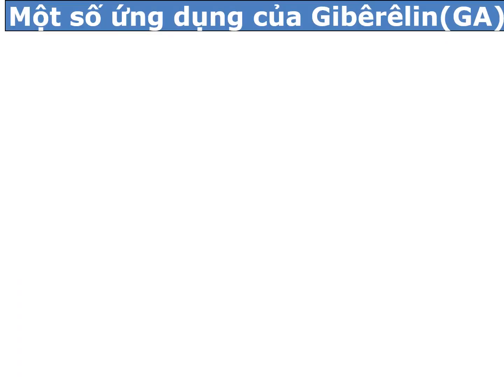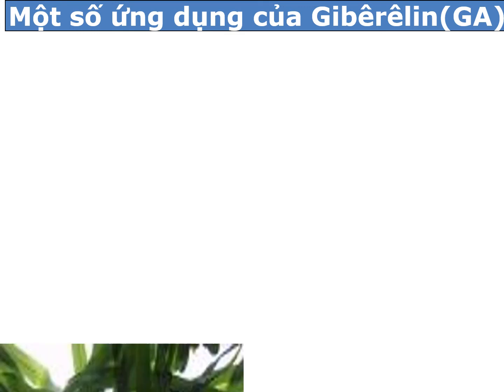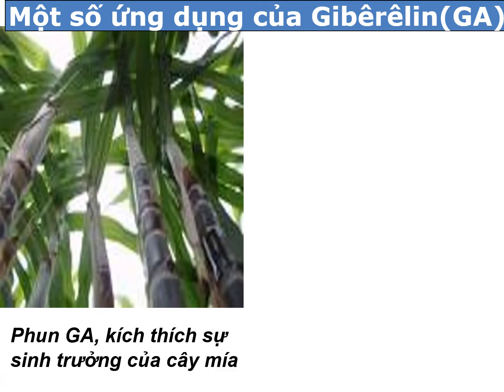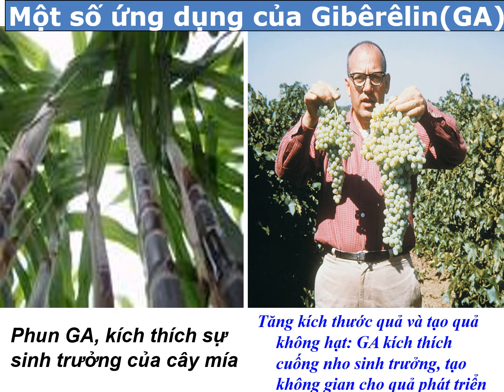Quan sát một số kết quả ứng dụng của gibberellin: đối với cây mía, khi sử dụng gibberellin thì nó sẽ kích thích sự tăng trưởng chiều cao của cây rất nhanh, từ đó giúp tăng năng suất. Hoặc đối với nho, khi có sử dụng gibberellin thì sẽ giúp tăng kích thước của quả và tạo quả không hạt.